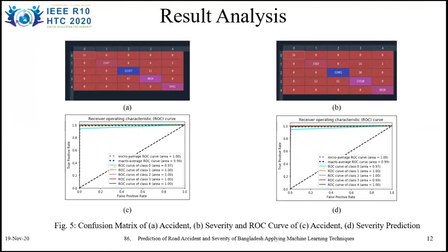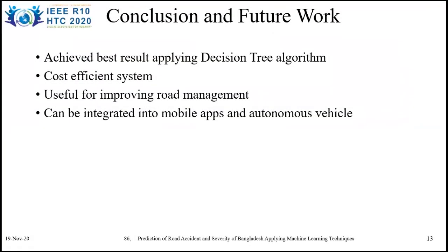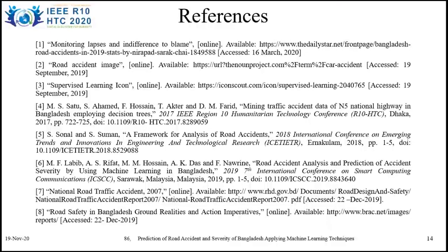A clear idea of micro and macro average of our prediction model can be obtained from the ROC. The micro average of the model is 1 and the macro average is 0.99. Since micro average is greater than macro average, it can be said that larger classes are accurately classified, whereas smaller ones are classified with an accuracy of 99%. In conclusion, we tried to build a system with high accuracy that can help prevent road accidents and lower the accident rate. Our system is cost-efficient and can be used for road management systems, and can also be implemented in mobile apps and autonomous vehicles. Thank you all for your patience.